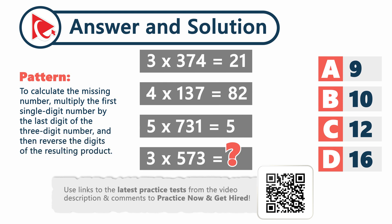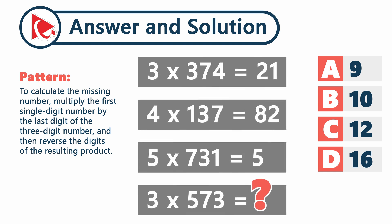To calculate the missing number, you need to multiply first single digit number by the last digit of the three digit number and then reverse the digits of the resulting product. Let's look at the example to better understand what's happening.